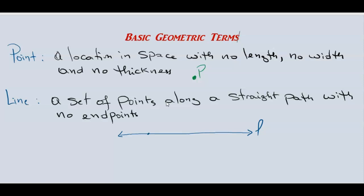We can also put points on the line — let's call them point Q and point O. You can use two points on that line to name it. Remember, a line has an infinite number of points — thousands, millions, billions of points on that line.